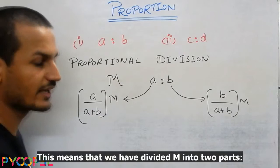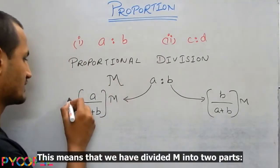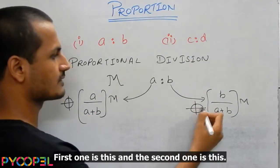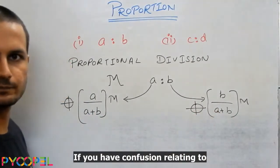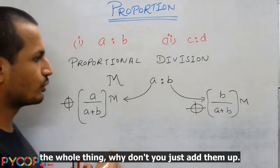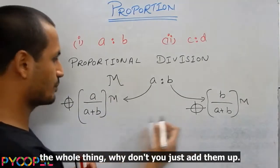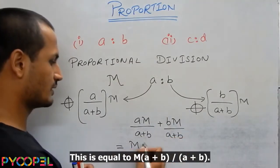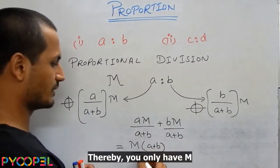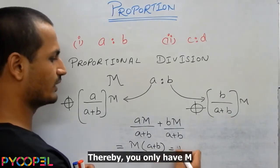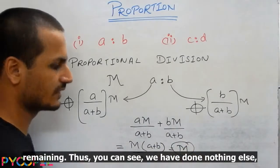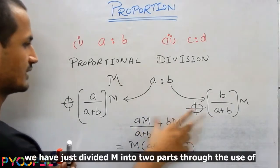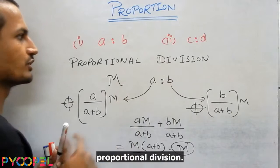This means that we have divided M into two parts. First one is this. The second one is this. If you have confusion relating to the whole thing, why don't you just add them up. This is equal to M common. A plus B upon A plus B, whereby you only have M remaining. Thus, you can see we have just divided M into two parts through the use of Proportional Division.